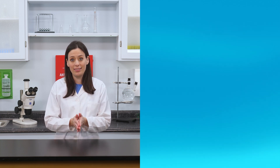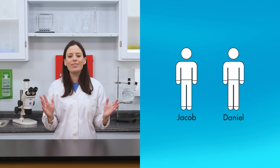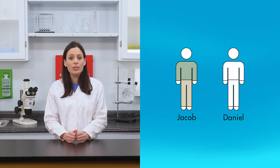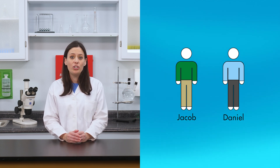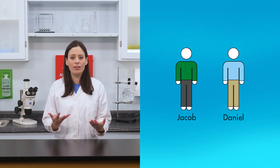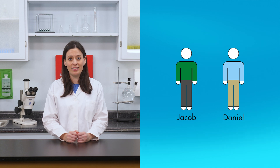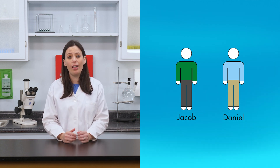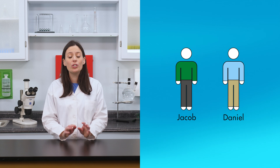Think of double replacement like this. Suppose there are two brothers, Jacob and Daniel, who both wear the same size clothes. Jacob wears a green shirt and tan colored pants, and Daniel wears a blue shirt with black pants. On a different morning, Jacob wears the green shirt with black pants, and Daniel wears the blue shirt with tan pants. Jacob gave up his tan pants and put on black pants; Daniel gave up his black pants and put on tan pants. Each boy exchanged something with the other boy, so a double replacement was made. The exchange produced two new outfits.